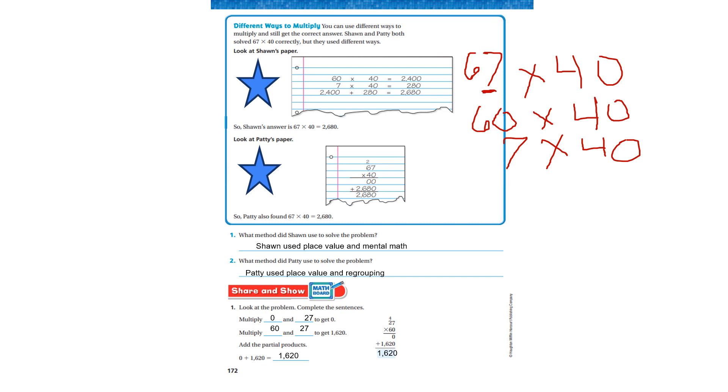It says, what method did Sean use to solve the problem? Well, Sean is here. Sean used place value and mental math. He went 6 times 4 is 24 and added the two zeros is 2,400. Then he went 7 times 40. He knows that 7 times 4 is 28 and he added the zeros, 280. That's all he did. And Patty used the place value and regrouping.